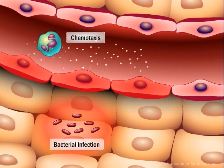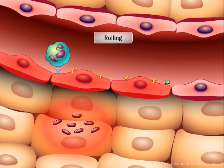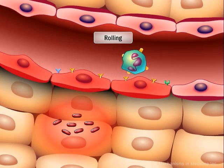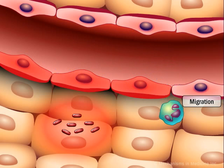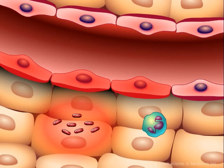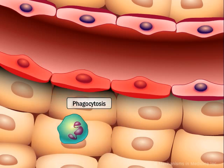A variety of molecules are expressed on the endothelial cell surface that allow the neutrophil to be captured, then roll along the endothelium, then adhere. Following adherence, the neutrophil migrates into the subendothelial tissue to reach the site of infection. The neutrophil engulfs the bacteria and eliminates them via breakdown within the phagosomes, a process known as phagocytosis.